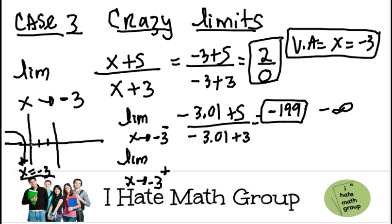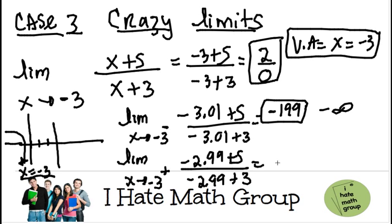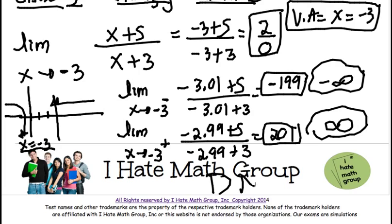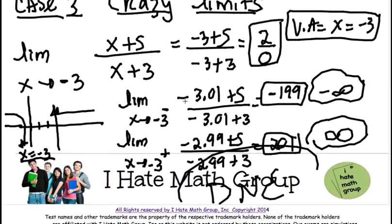Now I'll do the same from the right side. The closest value from the right is negative 2.99. So (negative 2.99 plus 5) over (negative 2.99 plus 3) gives me positive 2.01 on my calculator. This limit is crazy — from the left I get a very large negative number approaching negative infinity, and from the right I get a very large positive number approaching positive infinity. Because one side goes negative and the other positive, when you have a vertical asymptote like this, the limit does not exist.